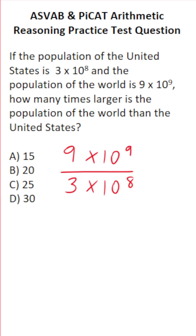So you might be asking yourself: how do I divide scientific notation? Well, the key to doing this one is to rewrite the problem. I'm going to do 9 over 3, times 10 to the 9th over 10 to the 8th. This is the same problem, just rewritten. And now we can use one of the laws of exponents to simplify this pretty quickly.